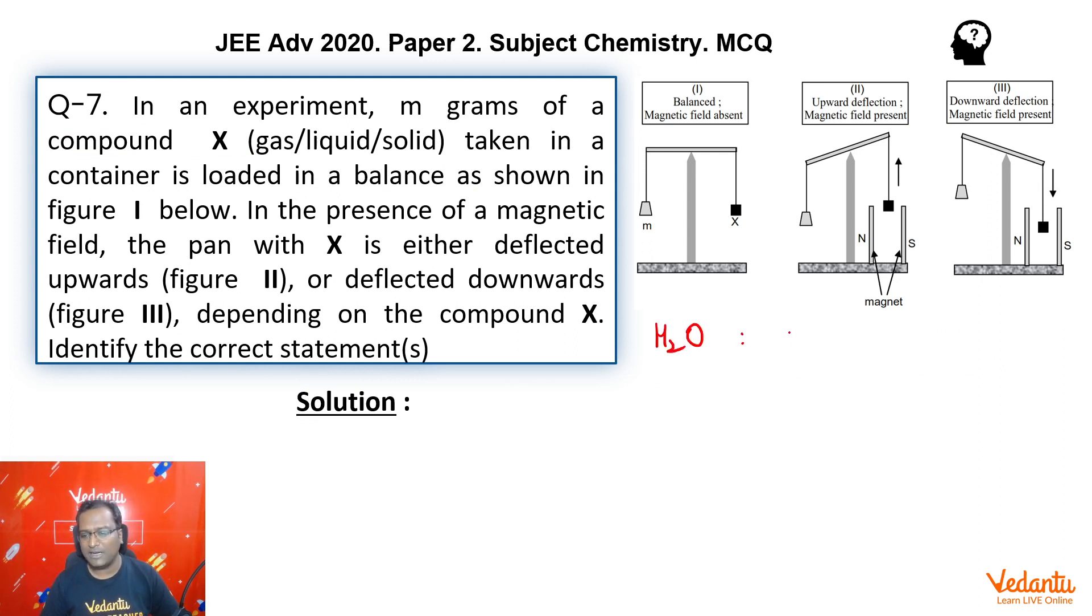Water. Now we know that in water, all the electrons are paired up. So this is a diamagnetic substance and therefore this will be deflected up. So A is correct.